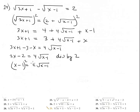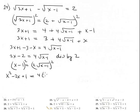Square both sides again: the left side gives x squared minus 2x plus 1 using FOIL. The right side, squaring 2 times the square root of x minus 1, gives 4 times (x minus 1), which distributes to 4x minus 4.